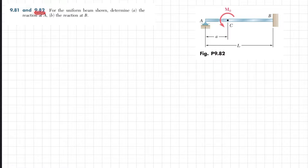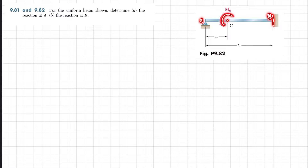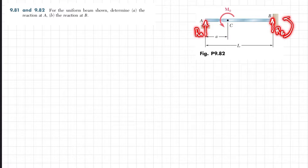Welcome back. Problem 9.82 — for the uniform beam shown, determine the reaction at A and the reaction at point B. This is a beam AB where there is a roller support at point A and a fixed support at point B. At point C we have a moment of M₀. If we remove the roller support, there will be a reaction force RA, and if we remove the fixed support, there will be a reaction force and a moment.